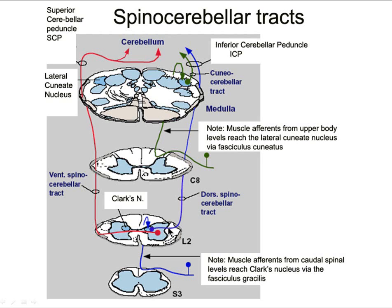These axons come out, pile up in the lateral funiculus, and then travel north. They use the inferior cerebellar peduncle in the medulla to find their way into the cerebellum, where they synapse mainly in the vermal or paravermal regions of the anterior and some of the posterior lobe.